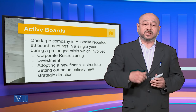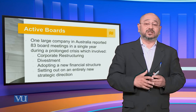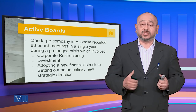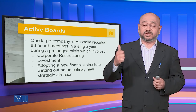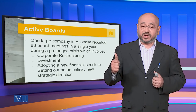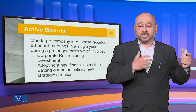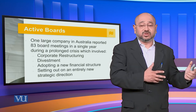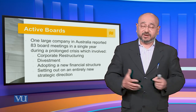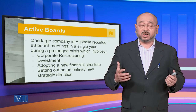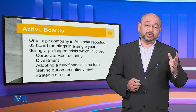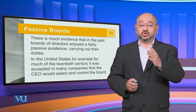One large company in Australia reported 83 board meetings in a single year during a prolonged crisis, which involved corporate restructuring, divestment, adopting a new financial structure, and setting out an entirely new strategic direction. Some companies have actually been able to work harder and more, and they have been able to create their own niche and their own markets.